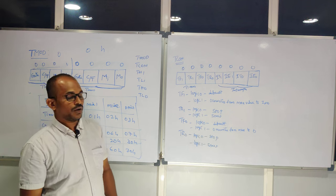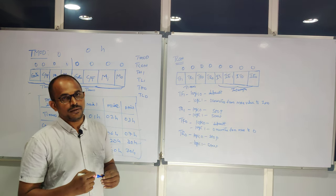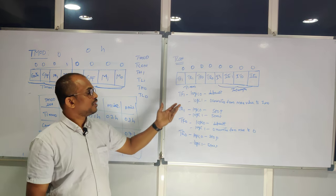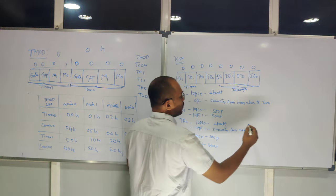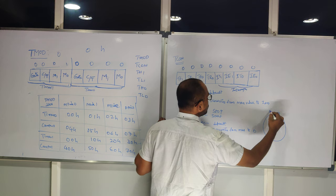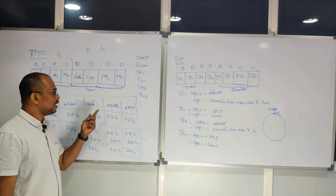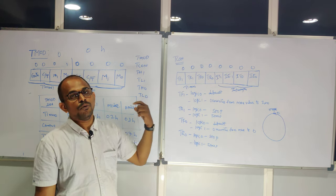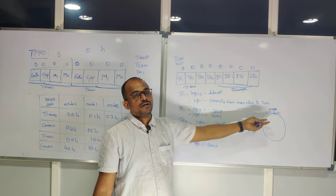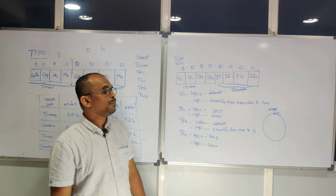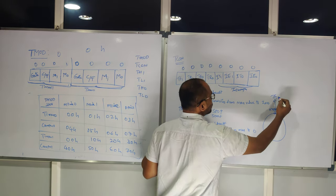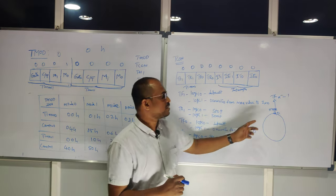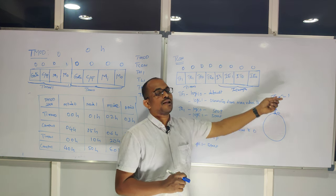TF1 is the timer 1 flag bit, and it is not affected by our programming directly. Based on the timer's counting process, the TF1 bit logic changes automatically. Whenever the timer reaches its maximum value — 8,191 in mode 0, 65,535 in mode 1, or 255 in mode 2 — and overflows back to zero, the flag bit becomes logic 1. You can monitor this flag bit to know how many times the timer has completed a rotation.